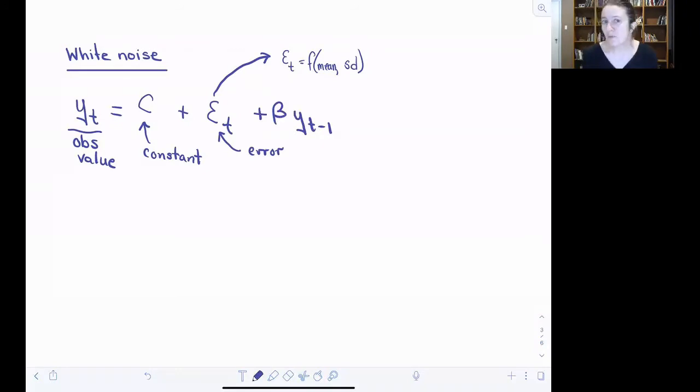And with that very simple modification, what we have done is we have created an autoregressive model, where the value at the previous time step, y sub t minus 1, is one of the predictors of the value of y that we see at time t.